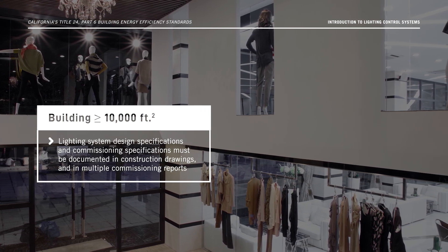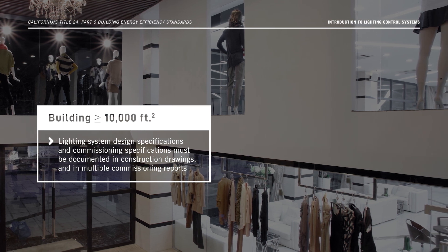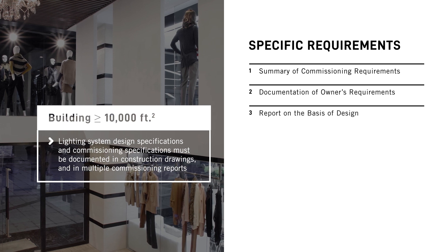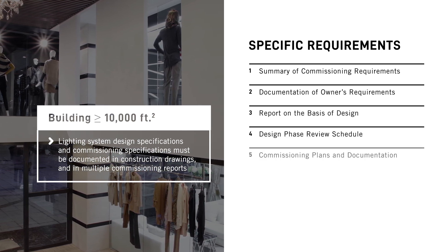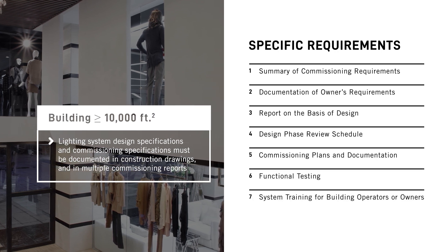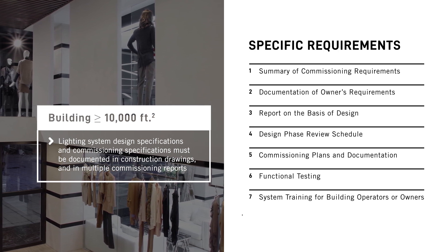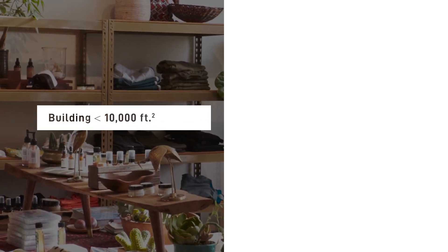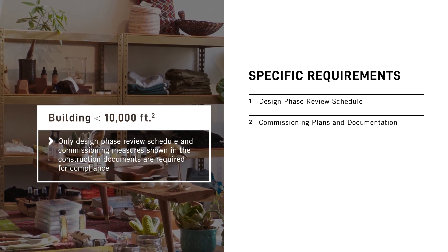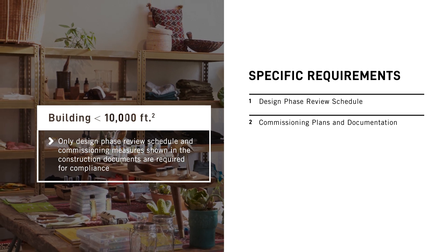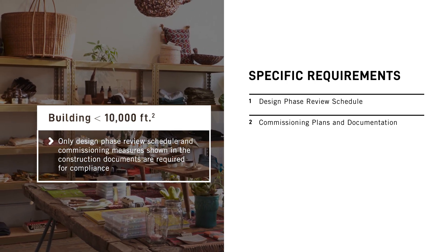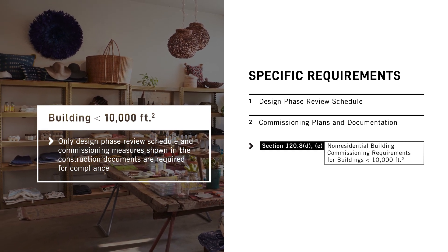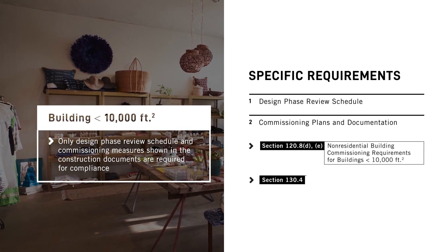The lighting system design specifications and commissioning specifications must be documented in construction drawings and in multiple commissioning reports. Specifically, you'll have to include documentation of owner's requirements, a report on the basis of design, a design phase review schedule, commissioning plans and documentation, functional testing, and system training for building operators or owners. More information on all of these can be found in section 120.8 of the Energy Code. For buildings less than 10,000 square feet, only the design phase review schedule and commissioning measures shown in the construction documents are required. While functional performance testing doesn't have to be documented as part of the commissioning process described in section 120.8 for buildings less than 10,000 square feet, acceptance tests still need to be conducted to get an occupancy permit, as outlined in section 130.4.